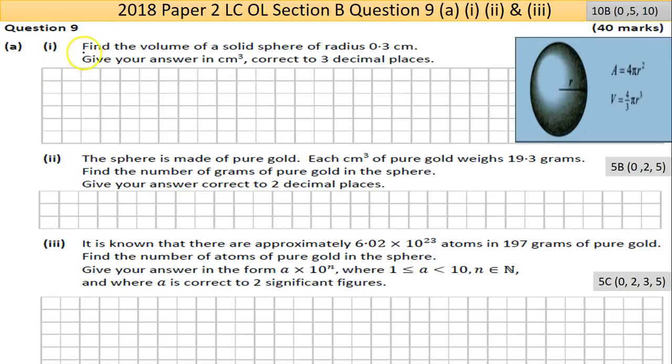Question 9 part A, part 1: find the volume of a solid sphere of radius 0.3 cm, give your answer in cm³ correct to 3 decimal places. I put in this screen grab of the formulas in the math tables, so just be familiar with where they are. The volume of a solid sphere - sphere is the important thing, volume is the important thing - so straight away it's this formula here. Write that out, put something into it correctly, and you have an attempt mark.